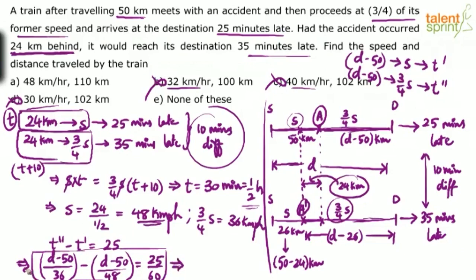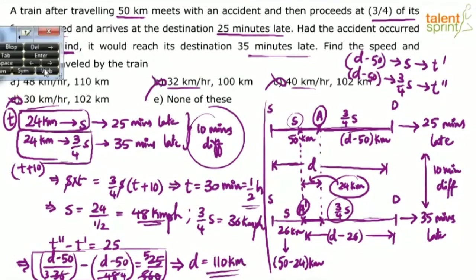Simplifying with LCM 144: (D − 50)/3 − (D − 50)/4 = 5, which gives (D − 50)/12 = 5, so D − 50 = 60, and D = 110 kilometers. Speed is 48 km/h and distance is 110 kilometers. Option A is the answer.